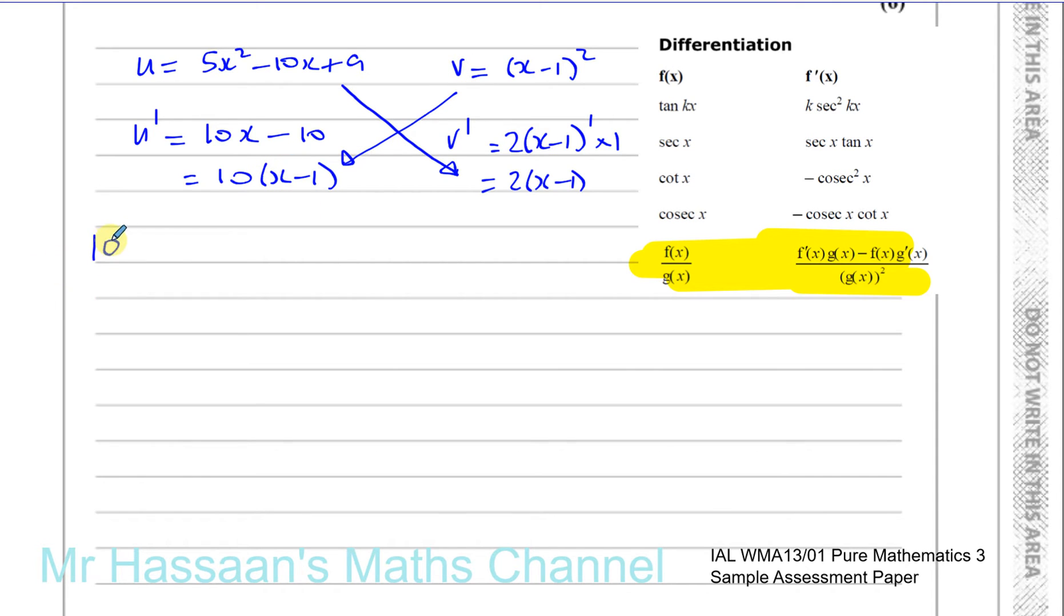So I would multiply these two together. I'm going to get 10 times x minus 1 times x minus 1 squared. Then you've got minus, and then I'll multiply these two together. So I'll get 2 times x minus 1 times 5x squared minus 10x plus 9. And then I'll divide that all by the square of x minus 1 squared, which will give me x minus 1 to the power of 4. Now, this is our dy/dx.